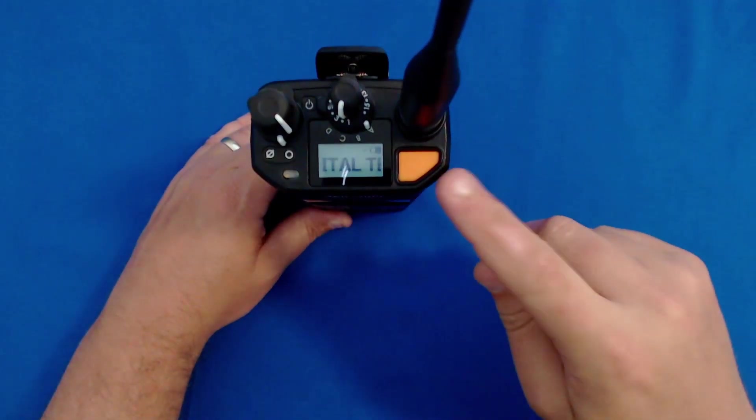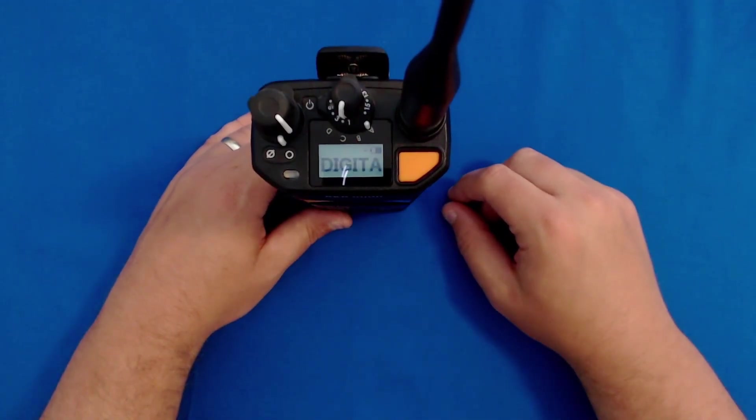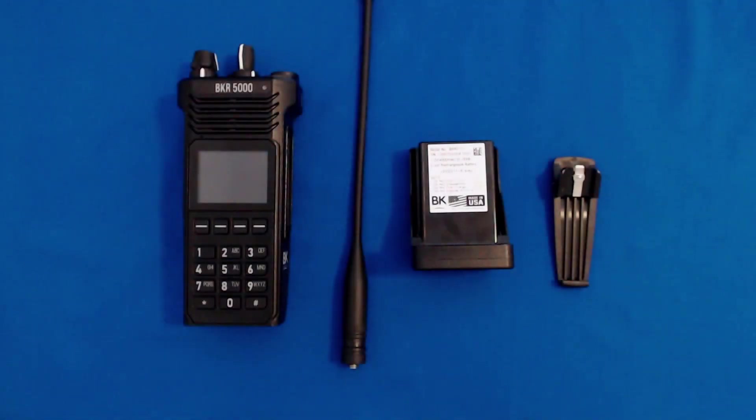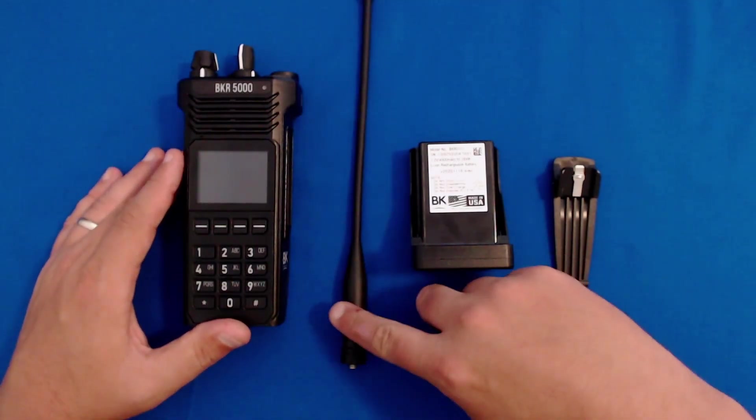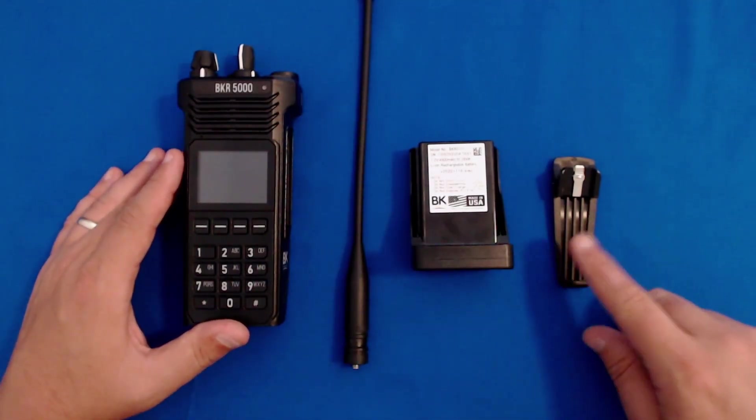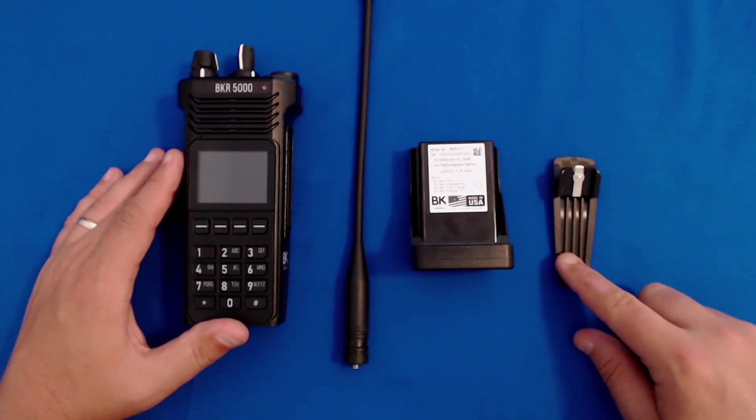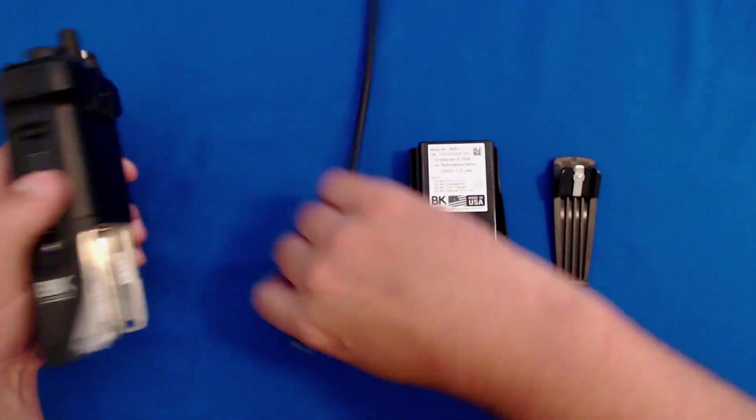Let's go over the radio. When you receive your BKR 5000, you'll receive the radio and antenna, a battery, and a belt clip. Let's go over how to install the antenna first.